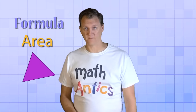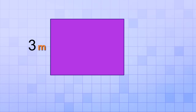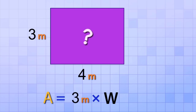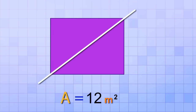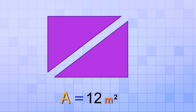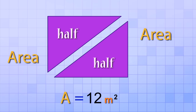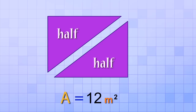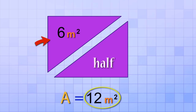To find the triangle formula, we're going to start with a rectangle again. The dimensions of this rectangle are 3 meters by 4 meters, so its area is 3 meters times 4 meters, which is 12 meters squared. Now, what if we were to cut this rectangle exactly in half along a diagonal line from opposite corners? It forms two triangles. Because each triangle is exactly half of the rectangle, the area of either triangle must be exactly half the area of the rectangle — that's 6 meters squared, since 6 is half of 12.